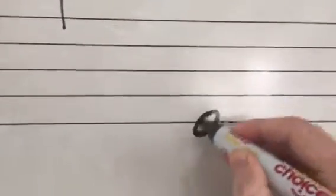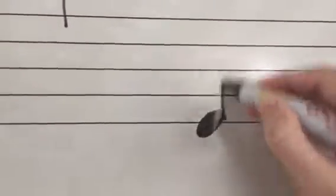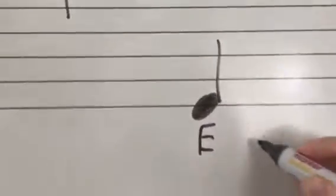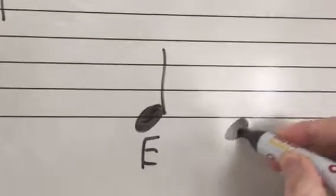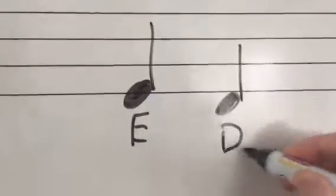Now you can do the same thing with going down, so you know that our lowest note on the line is an E. If we want to go lower, let's just sit below that line. That's going to be a D.